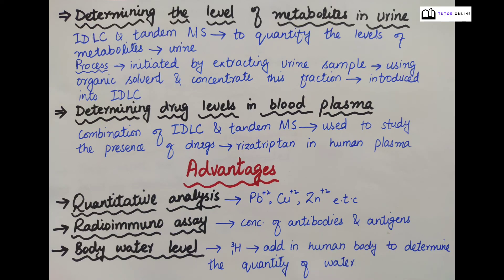For determining the levels of metabolites in urine by IDA: a recent study used isotopic dilution liquid chromatography and tandem mass spectroscopy to quantify the levels of metabolites in urine. The process was initiated by extracting urine samples using an organic solvent and concentrating this fraction. This concentration was then subjected to isotopic dilution liquid chromatography.